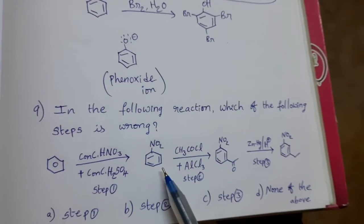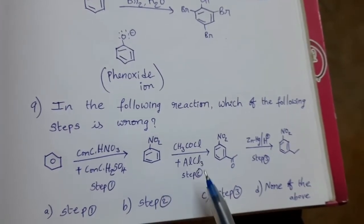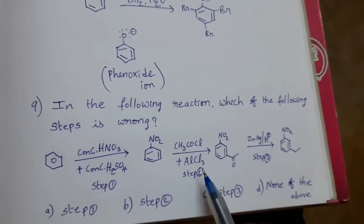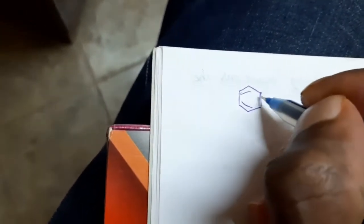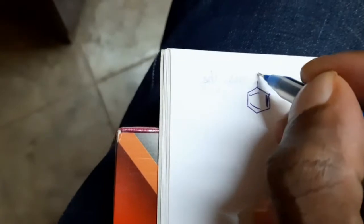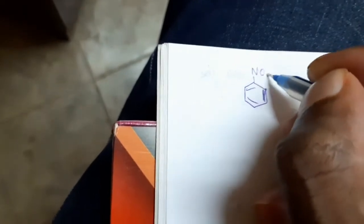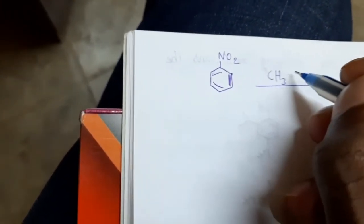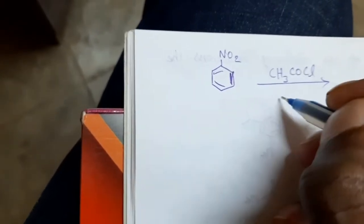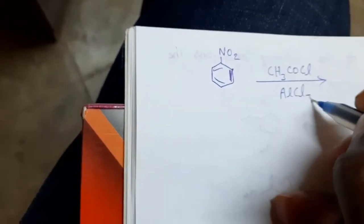Nitrobenzene is treated with acetyl chloride in the presence of AlCl3. The NO2 group is present on the benzene ring. CH3COCl in presence of AlCl3.